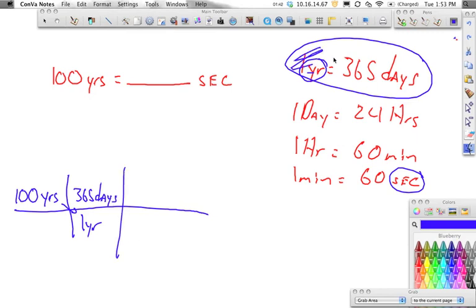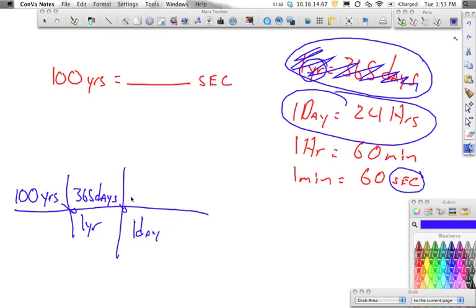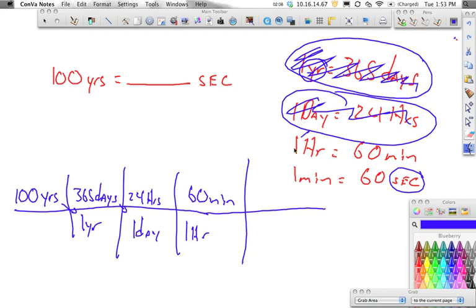Now, we haven't made it to seconds yet, so I keep going. And once I use a conversion factor, I usually like to cross it out. And since we have days right there, we use this conversion factor. One day equals 24 hours. And I keep going because I haven't made it to seconds yet. I know that one hour equals 60 minutes. And I keep going because I haven't made it to seconds yet. But I do know that one minute equals 60 seconds.